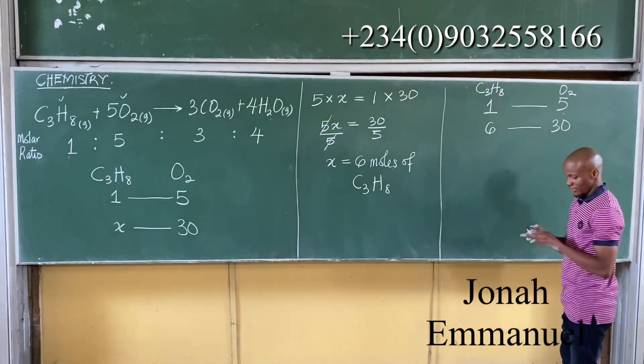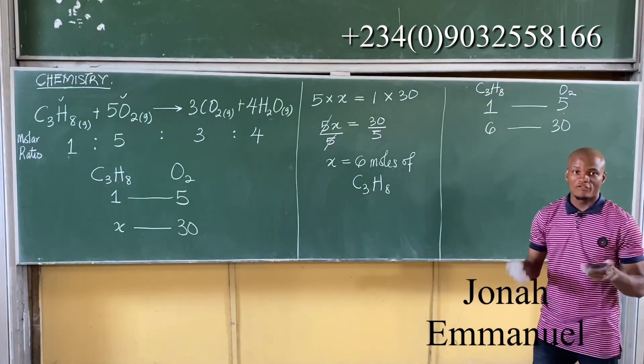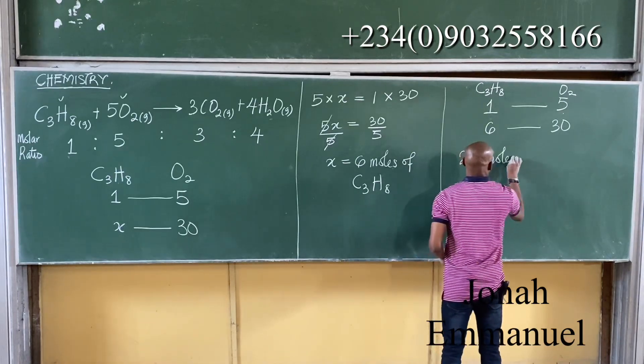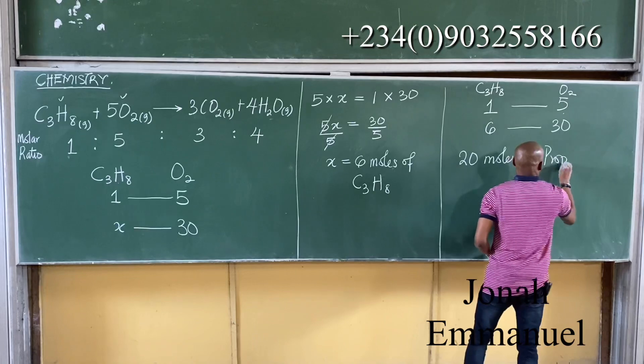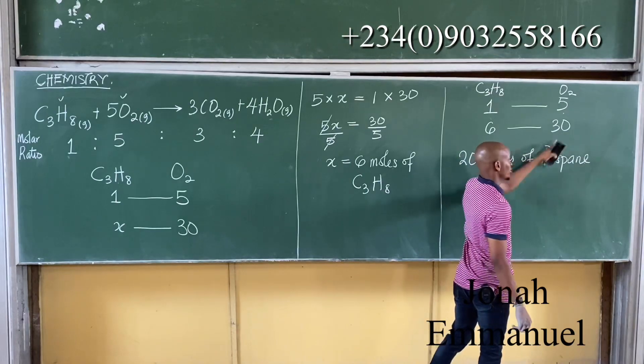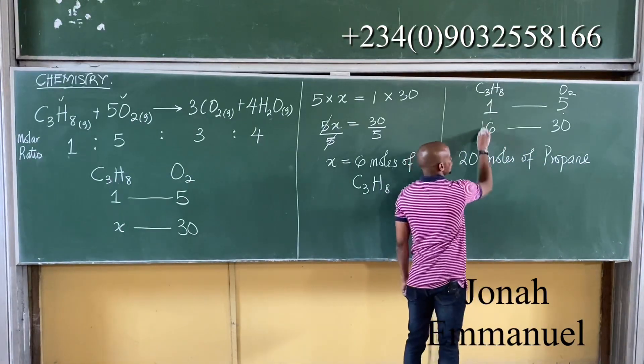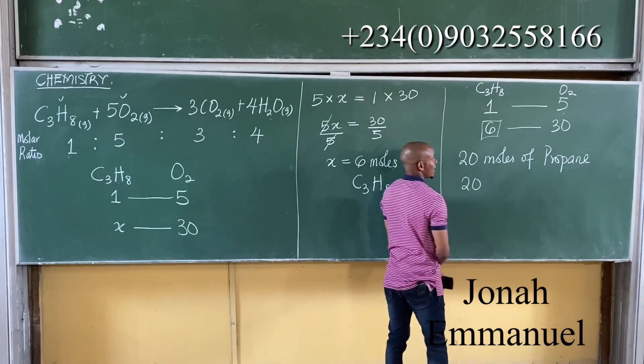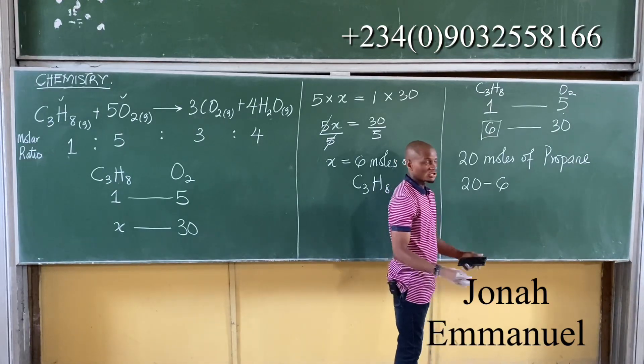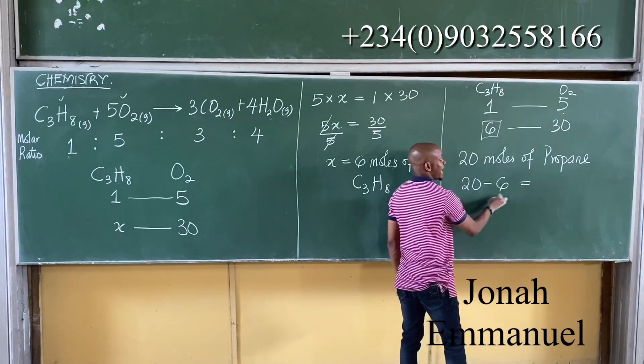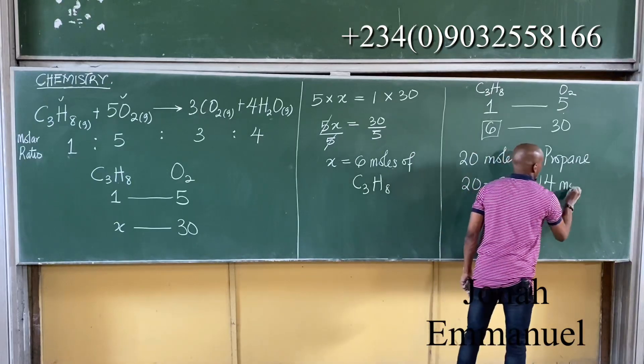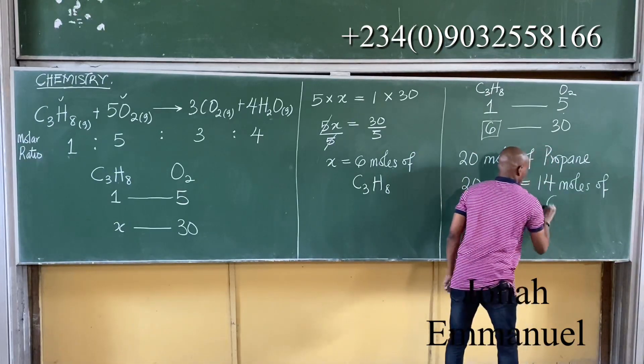If you look at the question there, the available number of moles of propane in the question there was 20 moles. This was the available moles of propane that reacted with 30 moles of oxygen. But from my calculation, we only need 6 moles of this. So I have 20 in total. I only need 6 moles of propane to work on the reaction. So hence, if I have 20, I use up just 6. How many is left? 20 minus 6. That gives you 14 moles of propane.